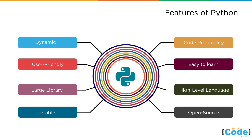Python is also portable, meaning that code created on one system — say Windows — doesn't need any changes to run on another system, such as Linux or Mac. Python also comes with a very large standard library, which means we don't need to create our own modules or download very specific libraries. Most common problems can already be solved by the standard libraries provided by Python's developers right from the beginning.